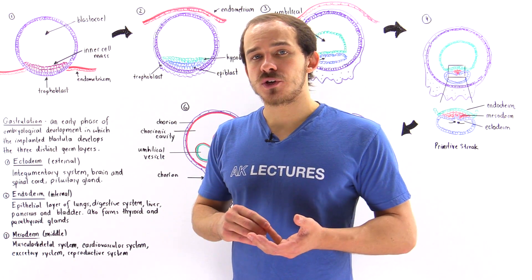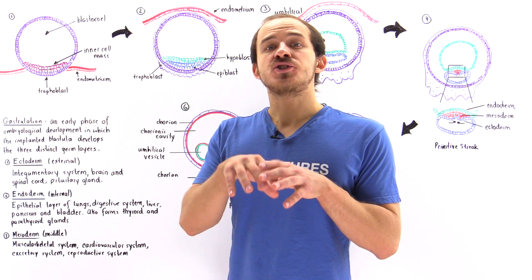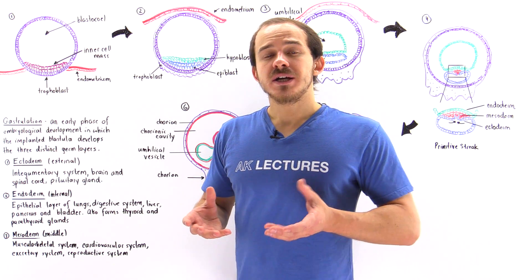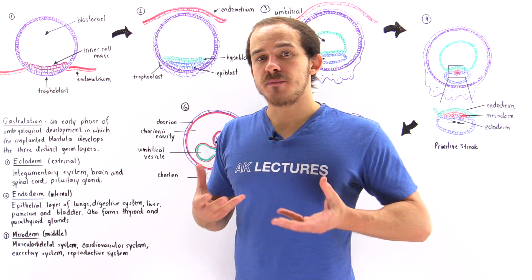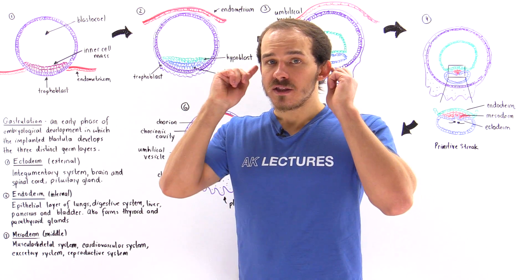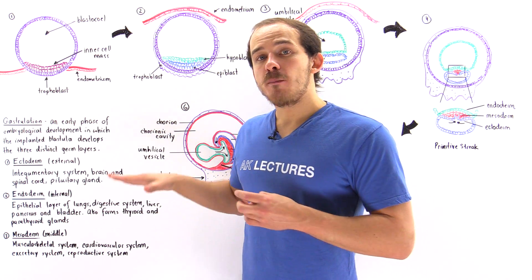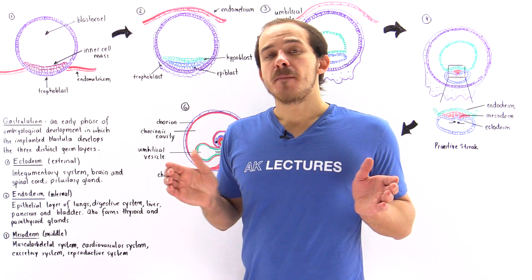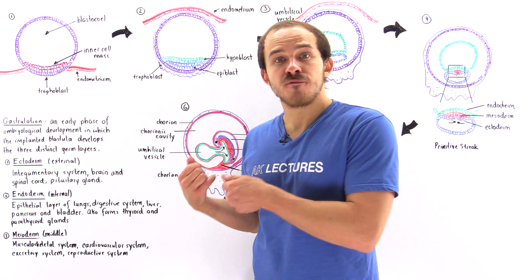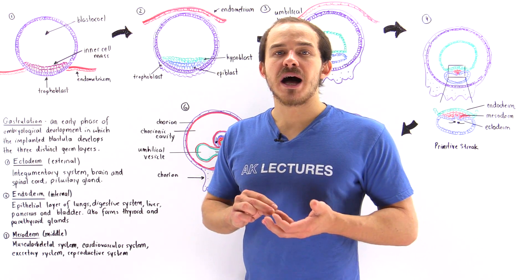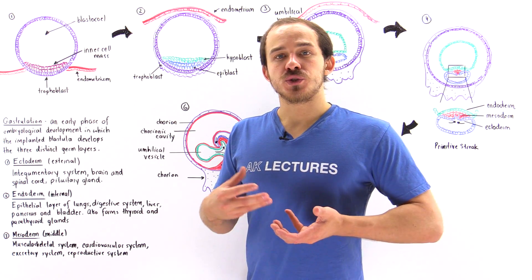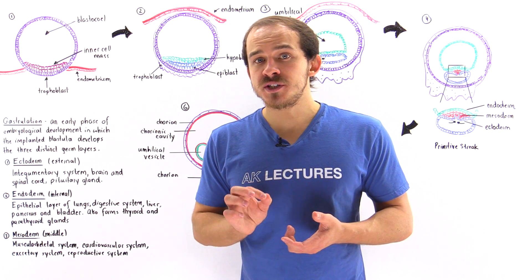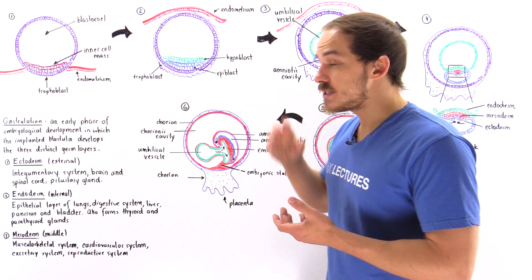The ectoderm is the outer, external layer of that developing embryo. The ectoderm gives rise to the integumentary system of the human body, and that includes the outer portion of the skin, the ears, the nails, and the hair. Because of an invagination process, a portion of that ectoderm makes its way into the developing embryo and forms the nervous system, including the brain, the spinal cord, and all the nerve cells of the peripheral nervous system. We also form the pituitary gland found beneath the hypothalamus in the brain.